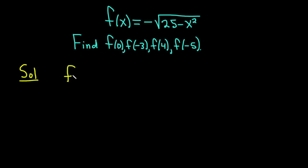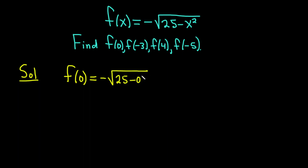Start with f of 0. f of 0 means we want to evaluate f at the x value 0. So we look at our formula for f of x, which is negative square root of 25 minus x squared, and we replace all of the x's with 0's. So this is minus square root of 25 minus 0 squared, which equals minus the square root of 25, and the square root of 25 is 5. So f of 0 is equal to minus 5.